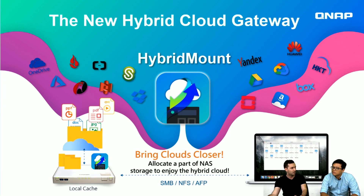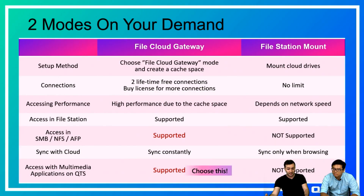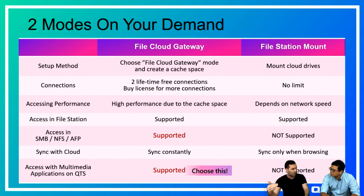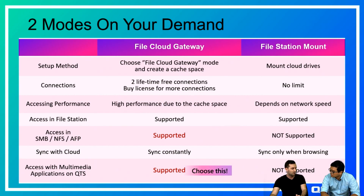There are two modes available. We're going to focus on the file cloud gateway because of the fast access it provides with Samba and AFP protocols, and also because it can be accessed by multimedia applications on QTS. The other mode, file station mount, is from the older version — it's the same as the previous remote mount feature. But today we're focusing on file cloud gateway because we can better utilize it through the multimedia console.